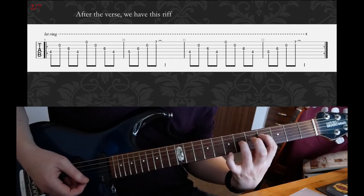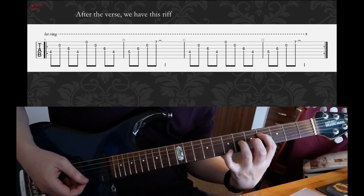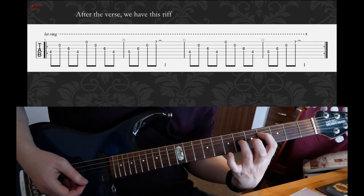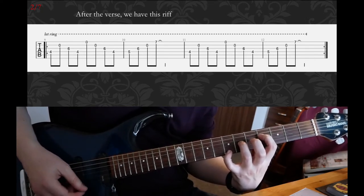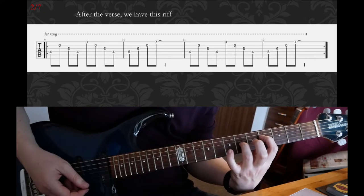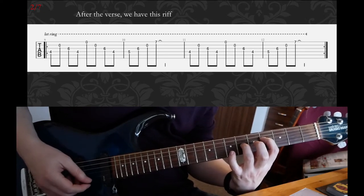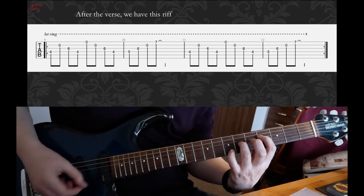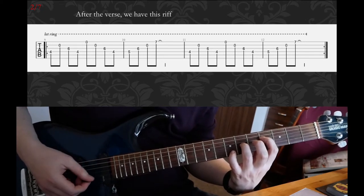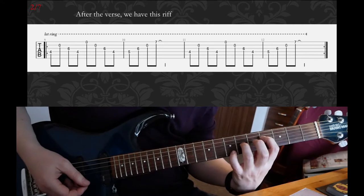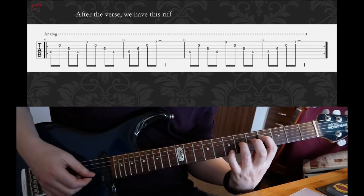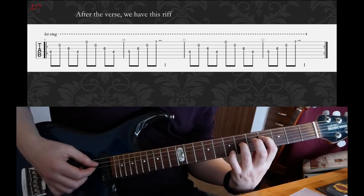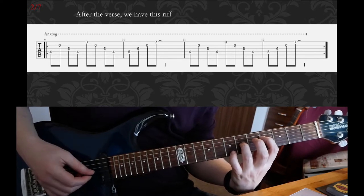The same goes for the pinky. Keep it ready to put it on the seventh fret on top E string. But to begin with, only hold D and G strings at fourth and sixth fret. Then you're gonna use the other strings as open strings. The first bar, right?